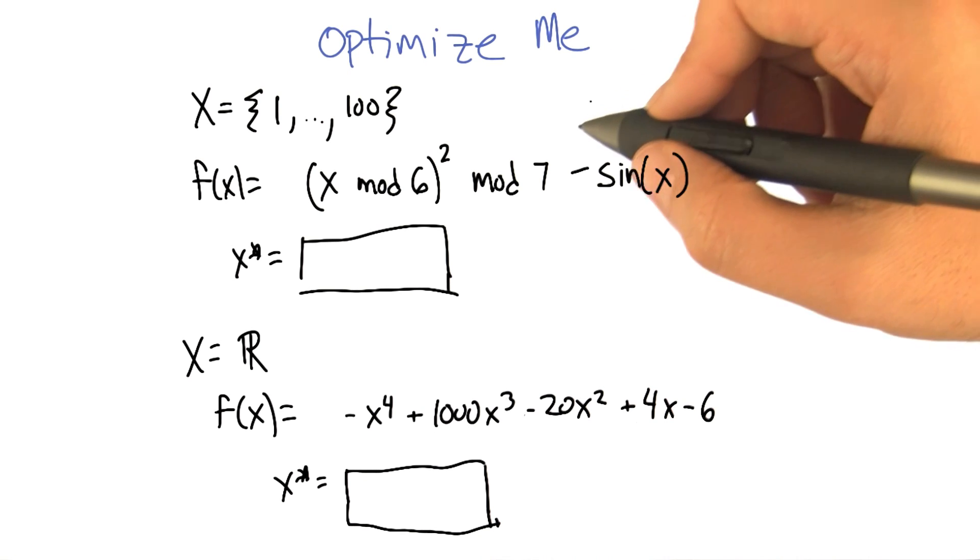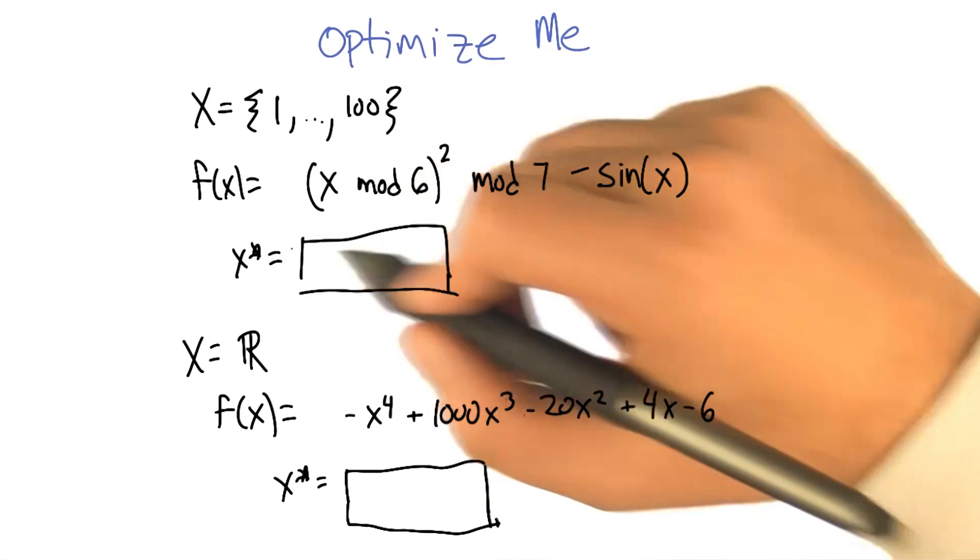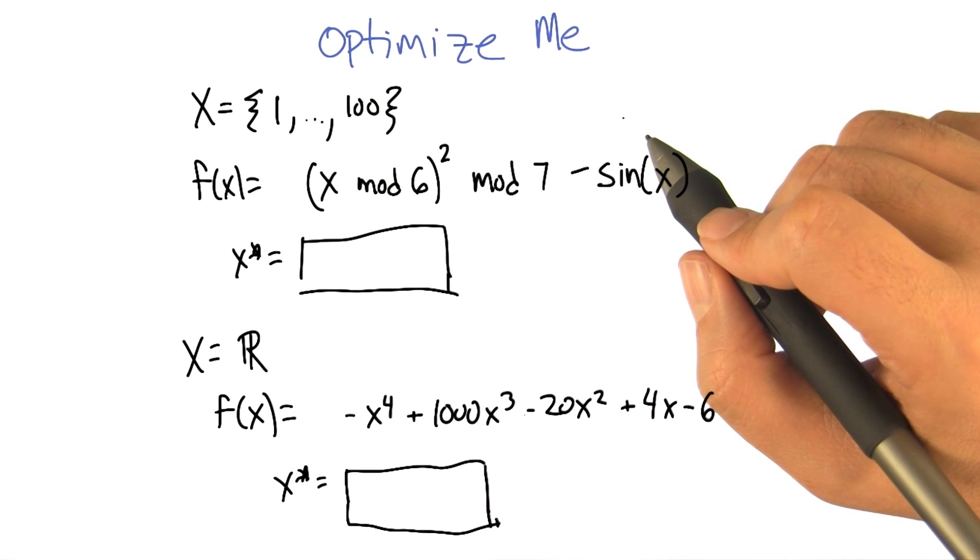And what I want you to do is, here's two different problems. There's two different input spaces, two different functions, and I want you to find the optimal x star, or something really close to it, if you can't get it exactly right.